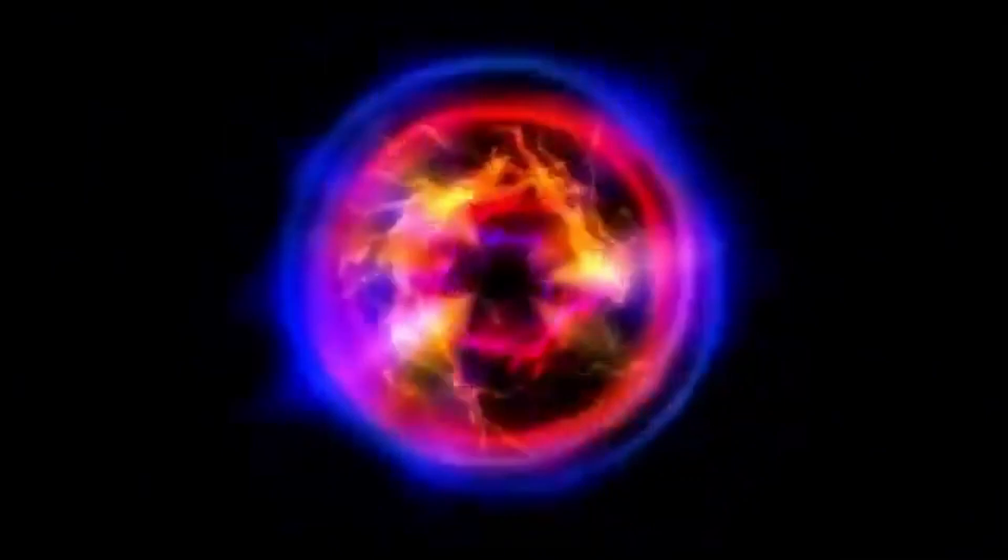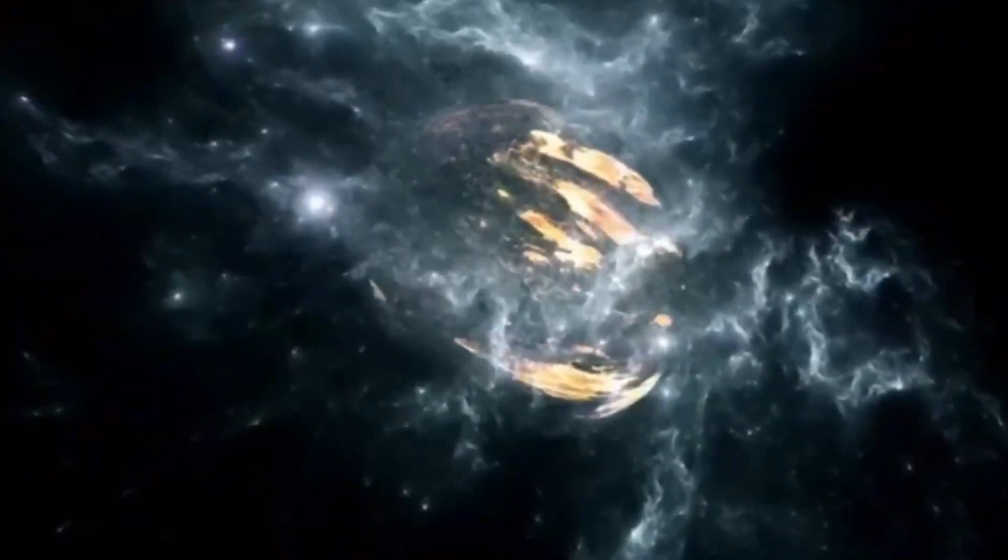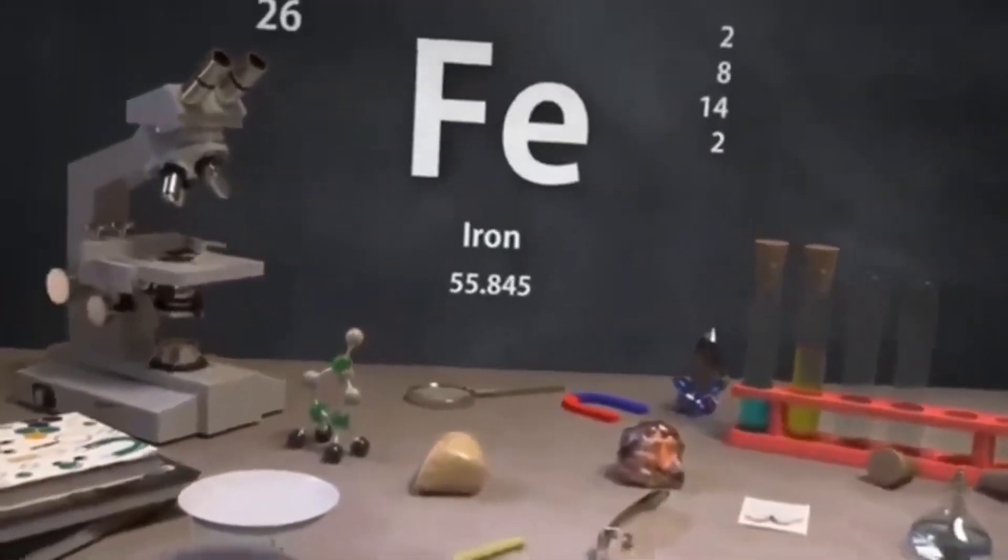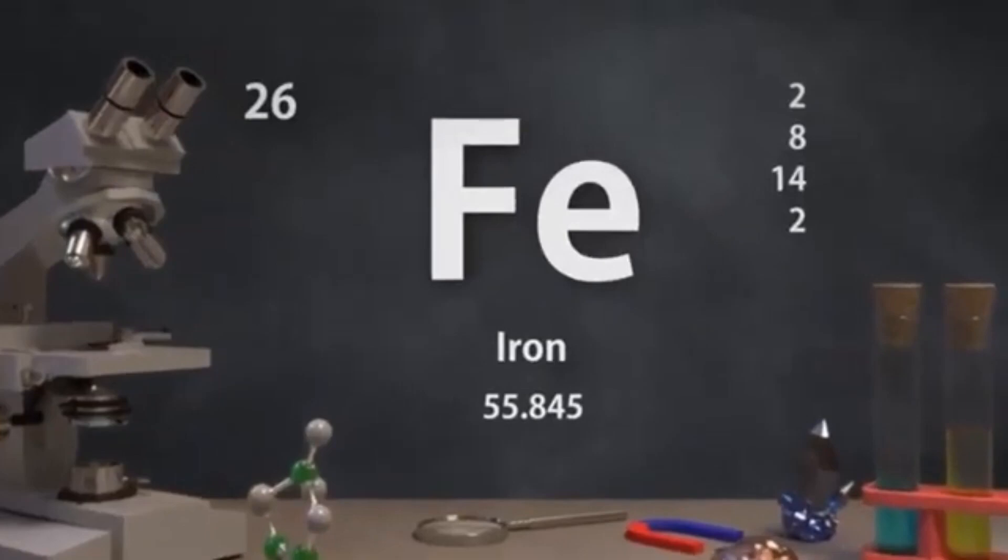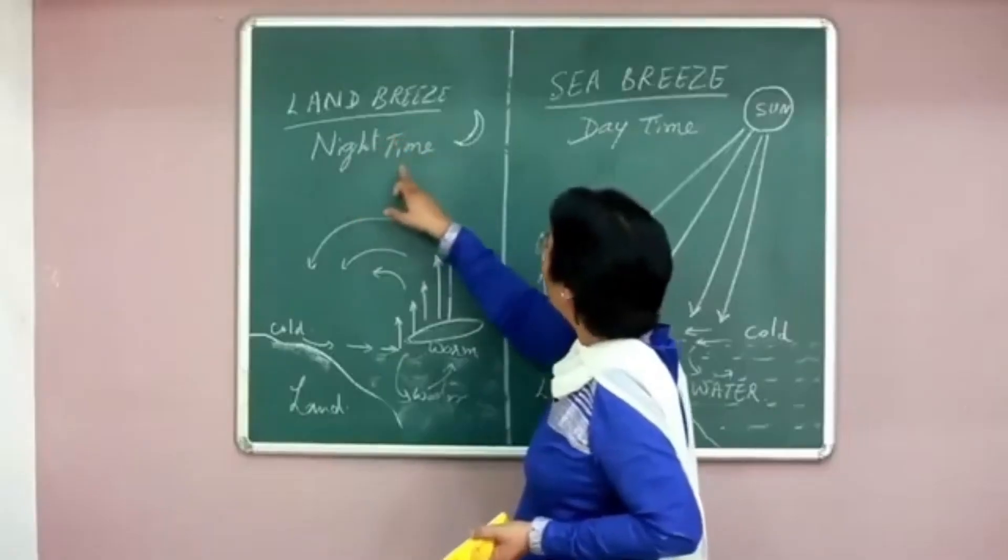Deep within, convection currents churn, carrying energy from the core to the surface. These currents create bright spots, like solar flares on steroids, adding to Betelgeuse's erratic glow. It's a star that refuses to sit still, a living, breathing enigma.